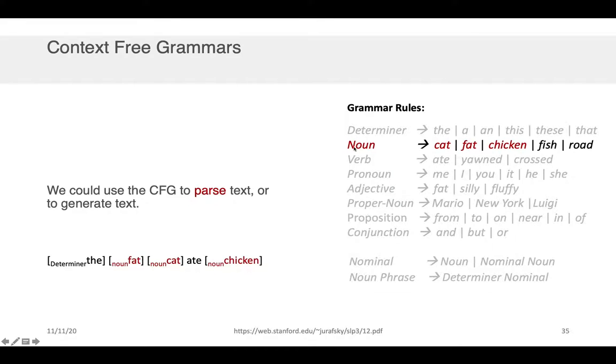And then similarly we'd go down our list of grammar rules and we'd say, oh, fat cat and chicken are all nouns. And finally we'd come to the third rule in the grammar and we'd say ate is a verb and we would have now for each of these tokens inside of our sequence what their part of speech tag was according to the grammar rule that we specified.